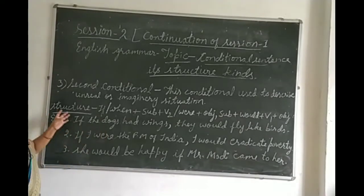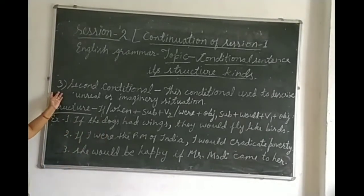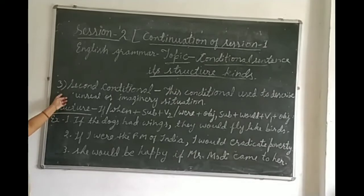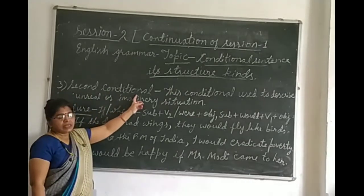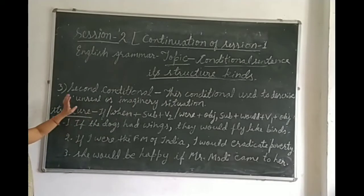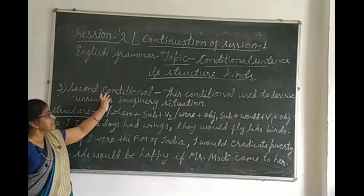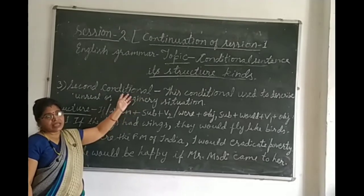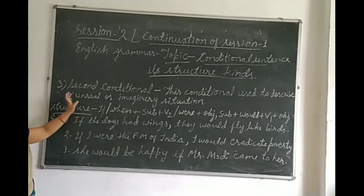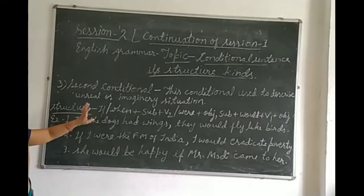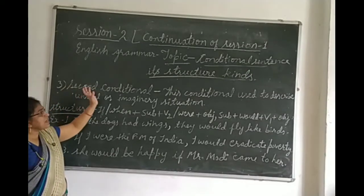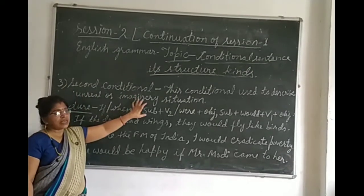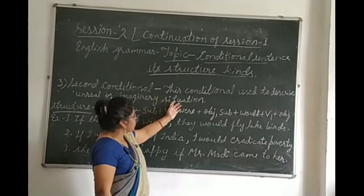Here I have already written the third kind of conditional sentence, that is the second conditional sentence. You may get confused — this is the third kind of conditional sentence, but this is the name: second conditional. It is also known as type 2 conditional. So, what is the second conditional sentence? The definition is here before you.